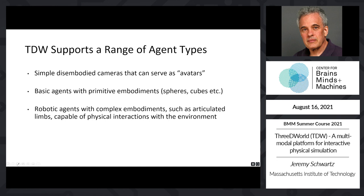Rigid bodies drop into a container of fluid and displace fluid based on the mass and shape of the object. Those bouncy cloth balls drop onto solid objects and wrap around them. If the situation were reversed and you had a soft beanbag chair-type object on the ground and dropped a rigid body onto it, it would push its way into the soft surface. It's totally bidirectional in those interactions.